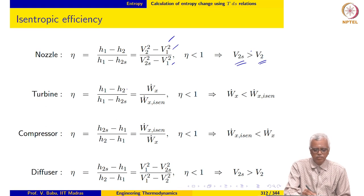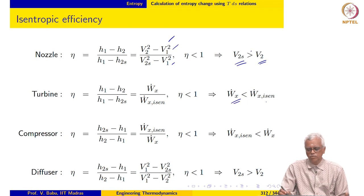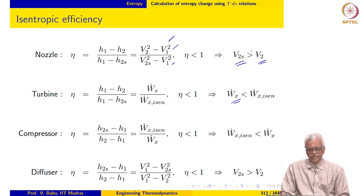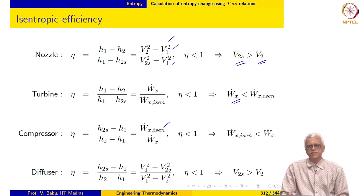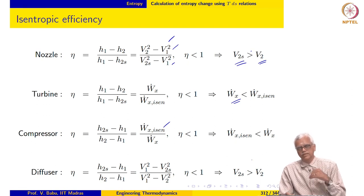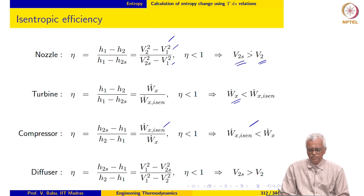In the case of the turbine, using the steady flow energy equation, the isentropic efficiency is the ratio of actual work to isentropic work. Since eta is less than 1, the actual work is less than the isentropic work as a result of internal irreversibilities. For the compressor, the isentropic efficiency is the ratio of isentropic work to actual work, because the isentropic compression is more efficient due to the absence of internal irreversibilities.